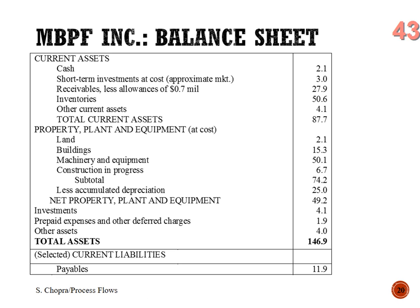Our cash-to-cash cycle is: 14.97 weeks in production, plus 5.8 weeks where we bill but don't get paid, minus the 6.9-week benefit from when we get parts but haven't paid our vendors. So our cash-to-cash cycle time is 14.1 weeks — defined as production plus accounts receivable minus accounts payable.